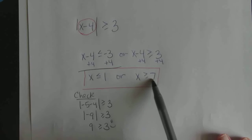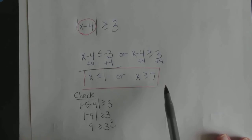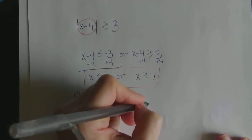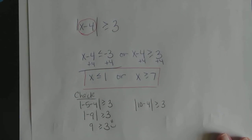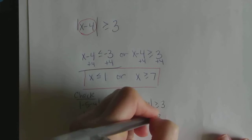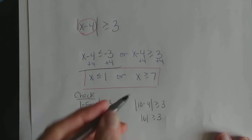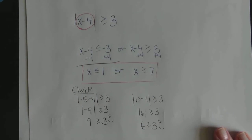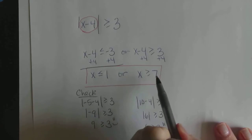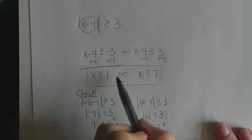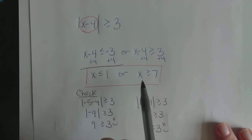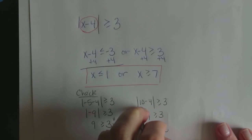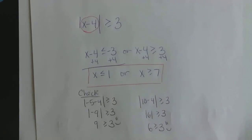Now let's pick a number greater than or equal to 7 — how about 10. The absolute value of 10 minus 4 must be greater than or equal to 3. That gives the absolute value of 6, which is 6. And 6 is greater than or equal to 3 — true. Anything on either of these intervals will make this true. If you pick something between 1 and 7, it just isn't going to work.